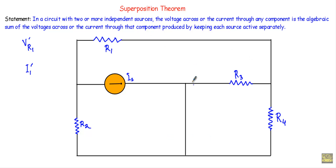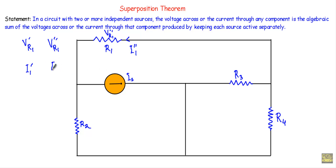I have replaced the independent voltage source with a short circuit. Now the current that will be flowing through R1 is I1 double prime, and the voltage that will be dropped across R1 is Vr1 double prime — Vr1 double prime is the drop across R1 due to the Is source, and I1 double prime is the current through R1 due to the Is current source.